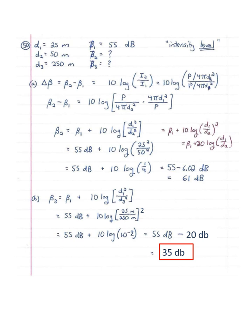Number 50: a question about intensity level for sound. At 25 meters from a sound source, the intensity level is 55 decibels. What is the level at distances of 50 meters and 250 meters? Right away we expect the intensity level to be lower than 55 decibels because we're looking at farther distances. Note this is asking about intensity level in decibels, not intensity in watts per meter squared. At distance 1, 25 meters, we have beta 1 equal to 55 decibels.